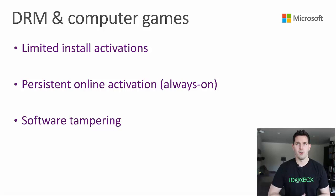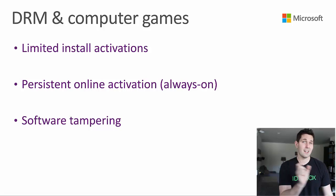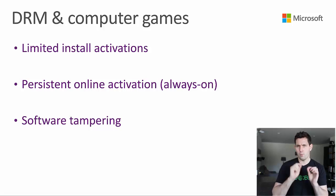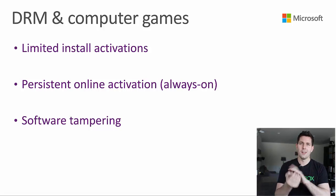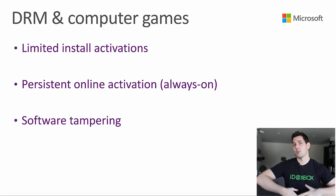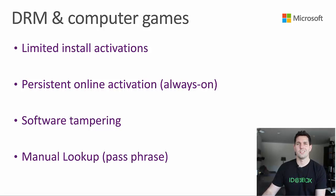Software tampering is another technique. Developers can do what's called a checksum and verify that all of the bits are exactly as they should be on the software itself. If one bit is out of place or has been added or removed, they'll know that someone has tried to change their software — and for that reason, the software just won't run at all. It's a pretty tricky situation.